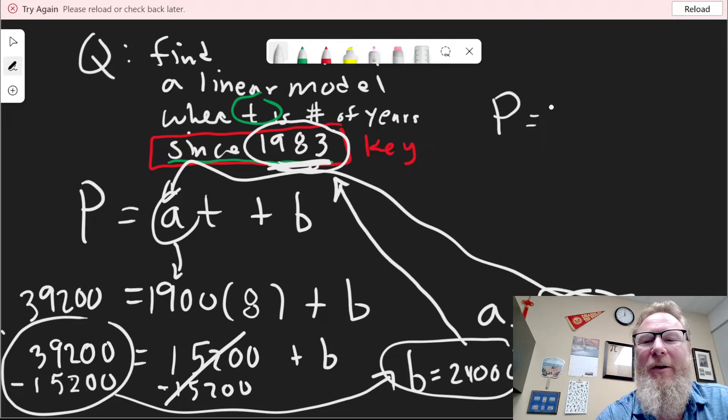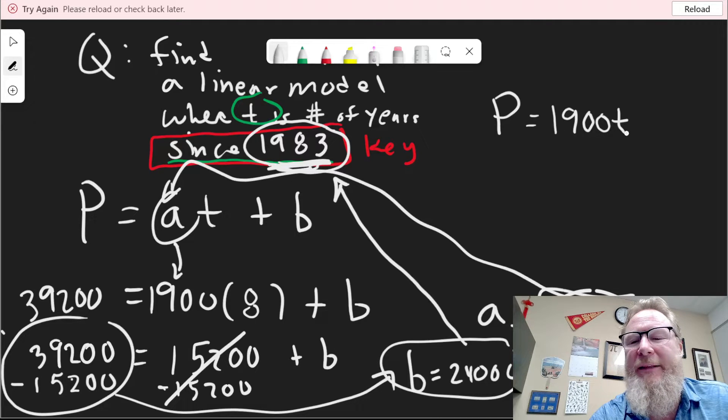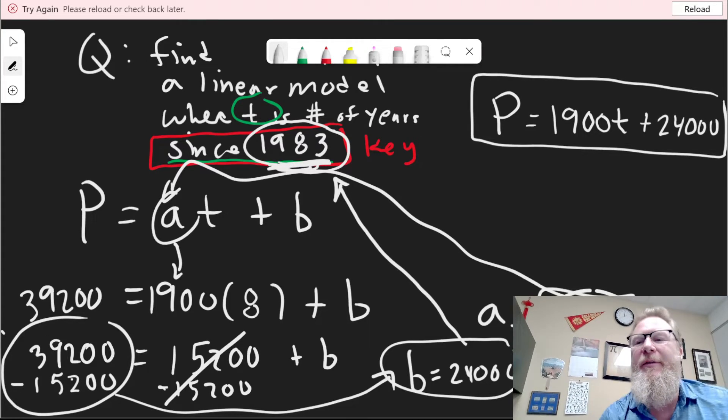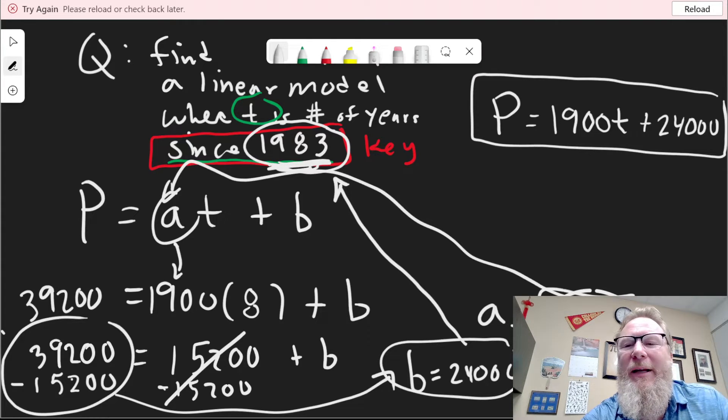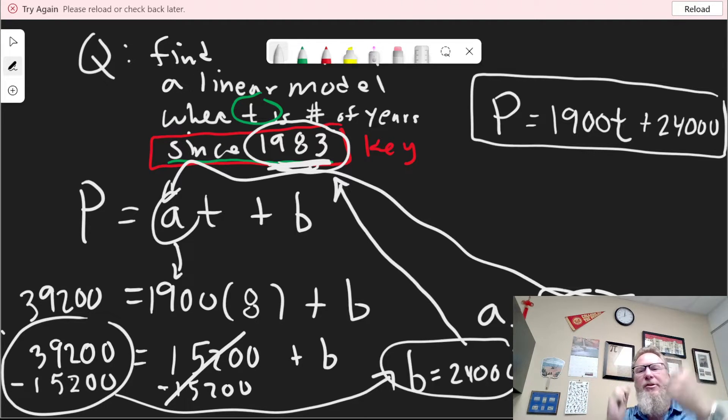So that's how many people were in the town in 1983. So I've got my A and I've got my B. You would have gotten the same A and the same B. It's a linear model, and a linear model is a straight line. So I've got 1,900T. Don't forget the T. And then 24,000 people. So there's your model: P = 1900T + 24000.